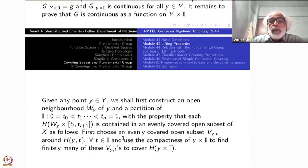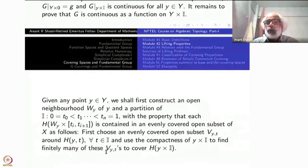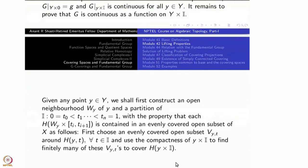First of all, choose an evenly covered open subset V(y,t) for each point H of (y,t) by continuity of H for every t inside I. You can choose a neighborhood subset V_i,t which is evenly covered wherever it goes to. And use the compactness of Y cross I to find finitely many of these V_i,t's to cover H of Y cross I.